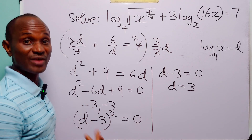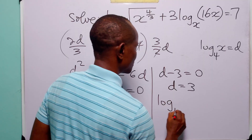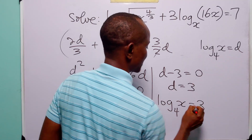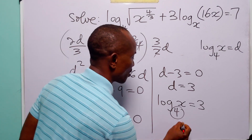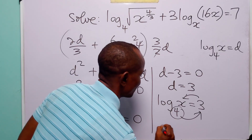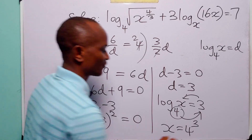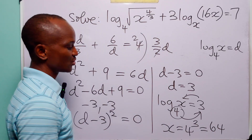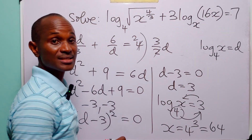So d is equal to 3. Now that we have found a value for d, we go back to the substitution. From here, we have that log to base 4 of x is equal to 3. And of course, you know that when we have a statement like this, it simply means that 4 to the power 3 is equal to x. So from here, we have that x is equal to 4 to the power 3, which of course is equal to 64. So the value of x that satisfies this logarithmic equation is 64.